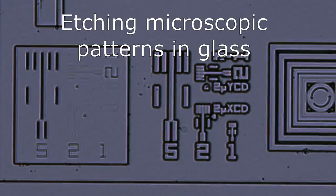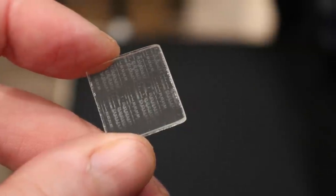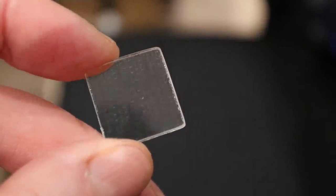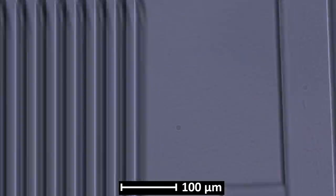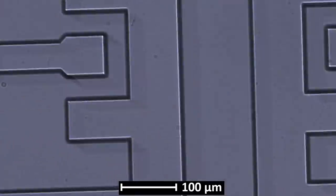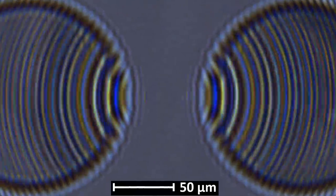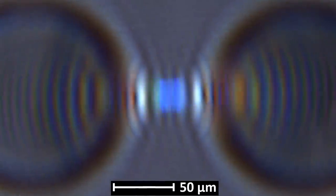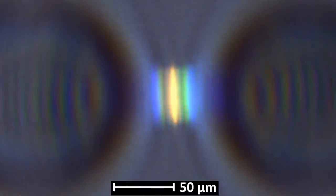Hi everyone, today I want to show you how to etch small patterns in glass using hydrofluoric acid. My main reason for wanting to do this is that I want to be able to make tiny optical components in or on glass surfaces, and etching is one of the options to do that. So I thought I'd give this method a try.